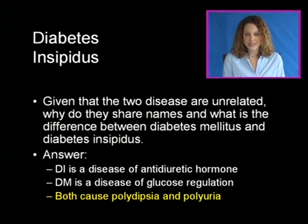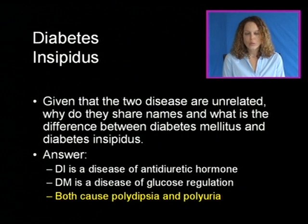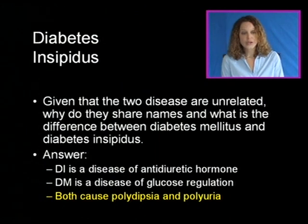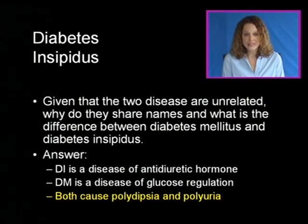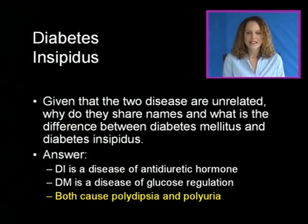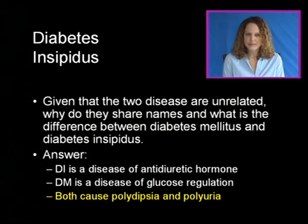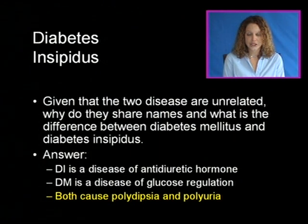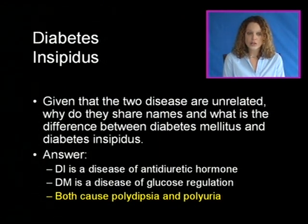Given that these two diseases are unrelated, why do they share names? Diabetes insipidus is a disease of antidiuretic hormone and fluid regulation, while diabetes mellitus is a disease of glucose regulation. However, both diseases do cause polydipsia and polyuria.